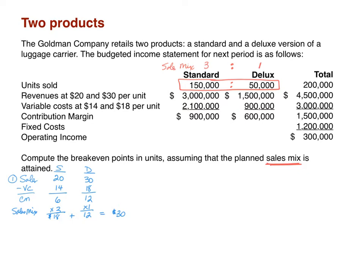In step two we find our break-even, but in this case we're finding break-even in bundles. Instead of dividing fixed cost by the contribution margin per unit, we divide by the weighted average contribution margin per bundle. Our fixed costs are $1.2 million, and our weighted average contribution margin per bundle is $30. This gives us the number of bundles we need to sell to break even — we need to sell 40,000 bundles. But this does not answer the question; we need the number of units, not bundles.